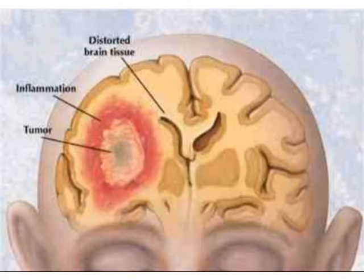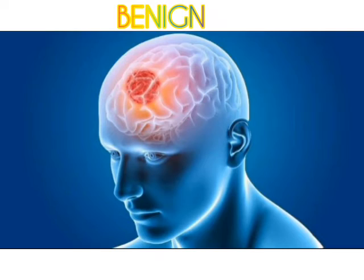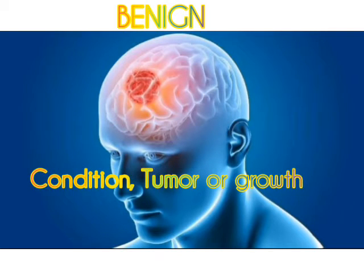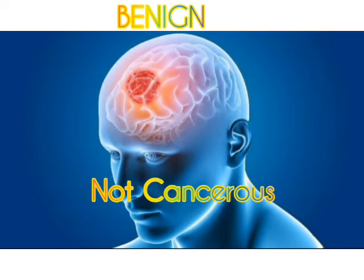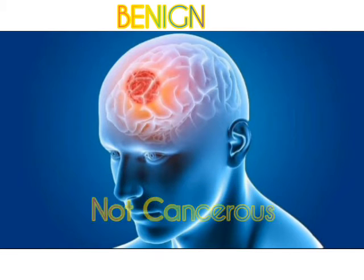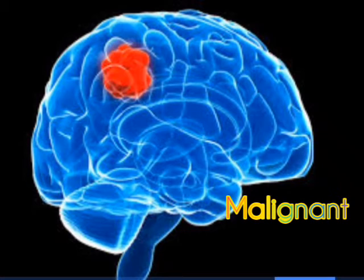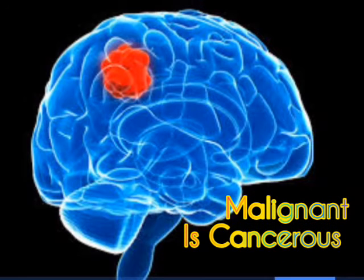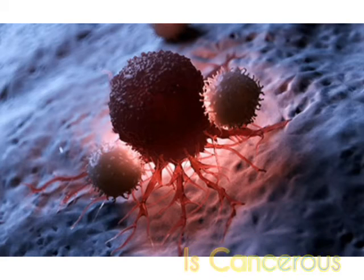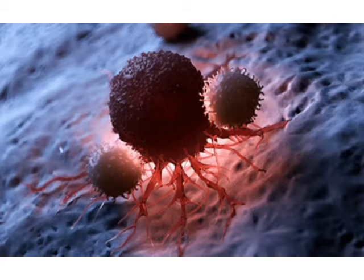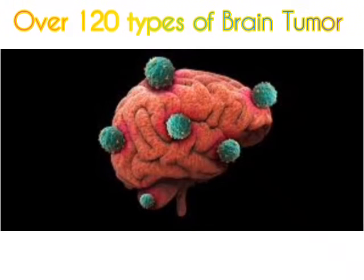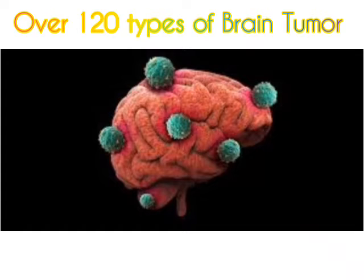This can cause brain damage and it can be life-threatening. The term benign means that the tumor or growth is not cancerous — it does not spread to other parts of the body. The term malignant means that it is cancerous and can spread to other parts of the body to destroy nearby tissues.